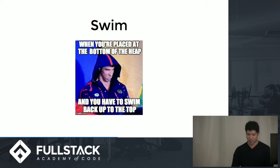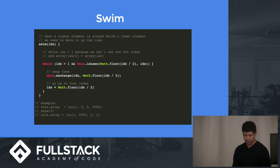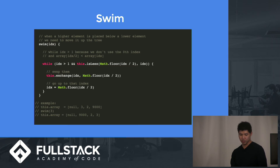The first main function is swim. This is when you have an element at the bottom of the heap and you want to move it up — to push greater elements to the top because you want the max at the top. You iterate up until index 1, because you don't need to swim past the first index which holds the maximum element. You keep swapping if the element above is less, and then change the index to be the parent index using integer division by 2. For example, if you have the array [null, 3, 2, 9000], you swap 9000 with 3 because 3 is at the parent node.